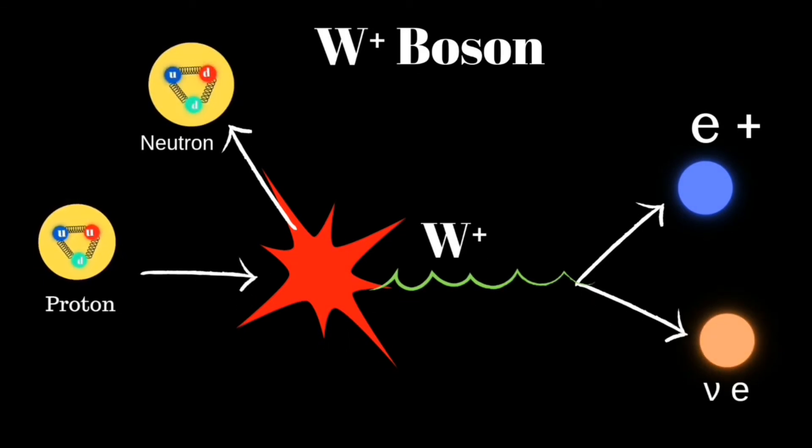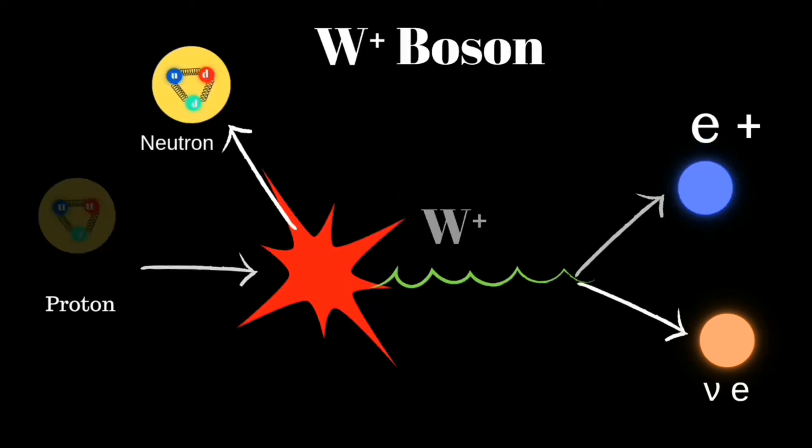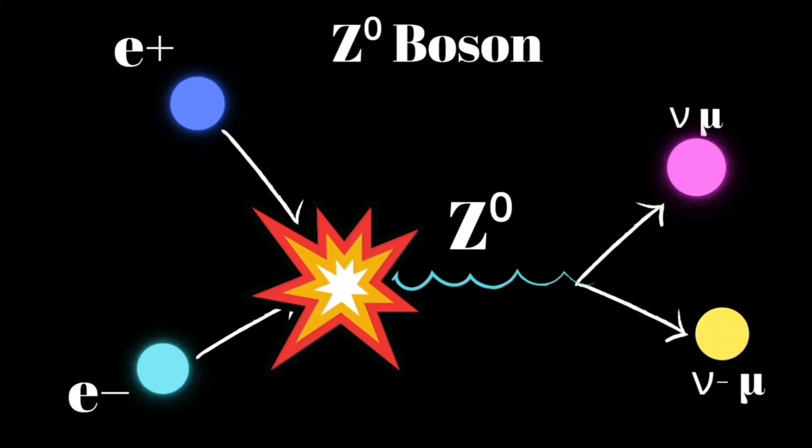Another one with positive electric charge is the W plus boson. Similarly, in beta plus decay, W plus boson is created when a proton is converted to a neutron, and W plus boson decays into a positron and an electron neutrino. Z boson is neutral. Z boson is generally produced from the pair production of a particle and its antiparticle, such as an electron and a positron producing a Z boson, and then it decays into a muon and an antimuon particle.